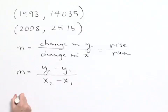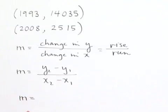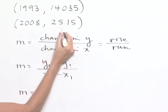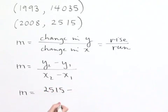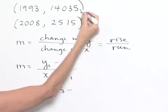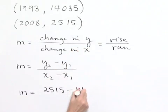So for instance, what we can do in order to find our slope in this problem is we can take our Y value from our second point, which is 2,515, subtract from it the Y value from our first point, which was 14,035.